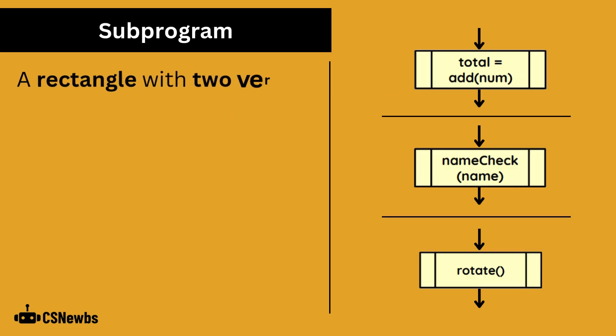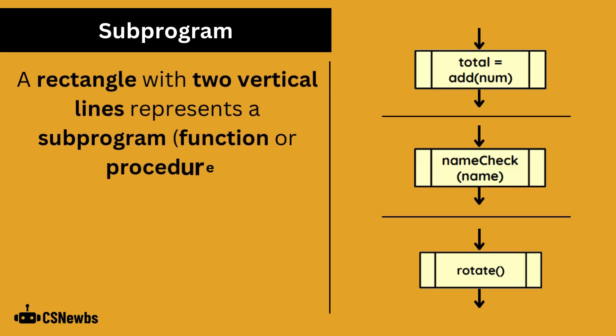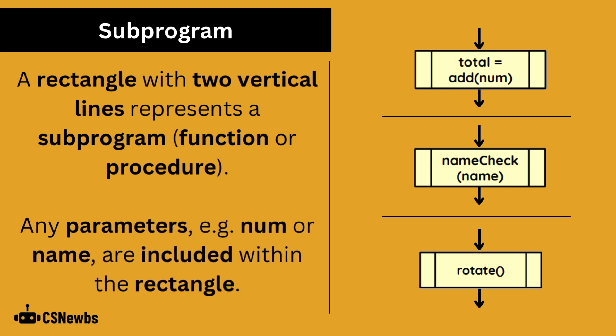A rectangle with two vertical lines represents a subprogram, which is a function or procedure. Any parameters, for example num or name, are included within the rectangle.